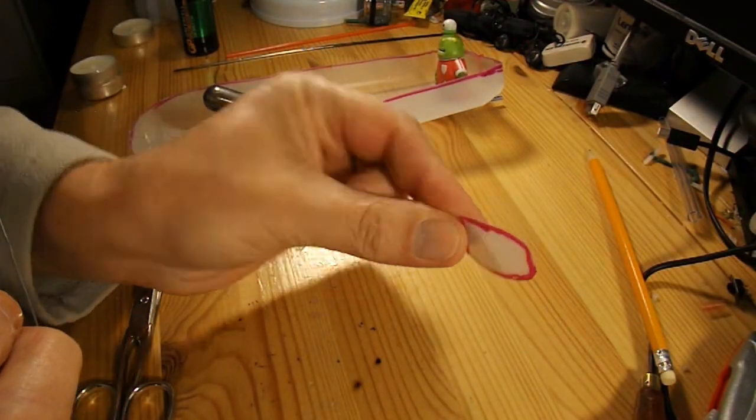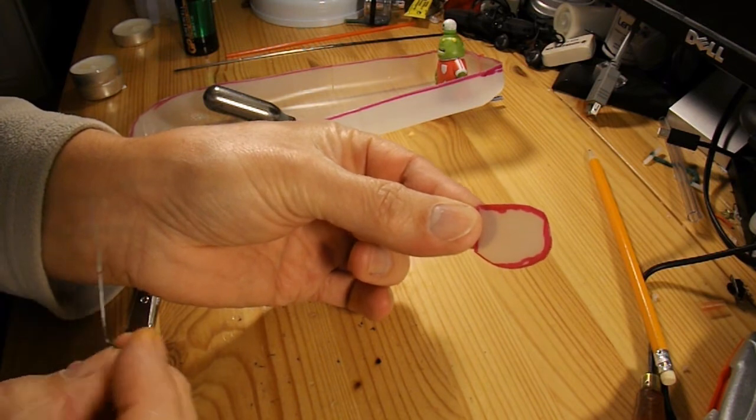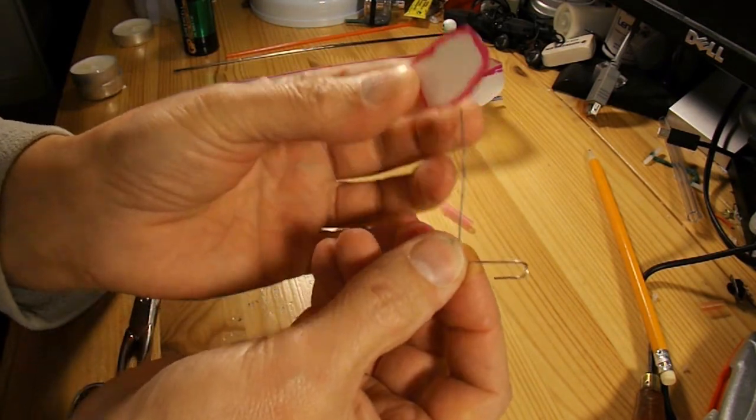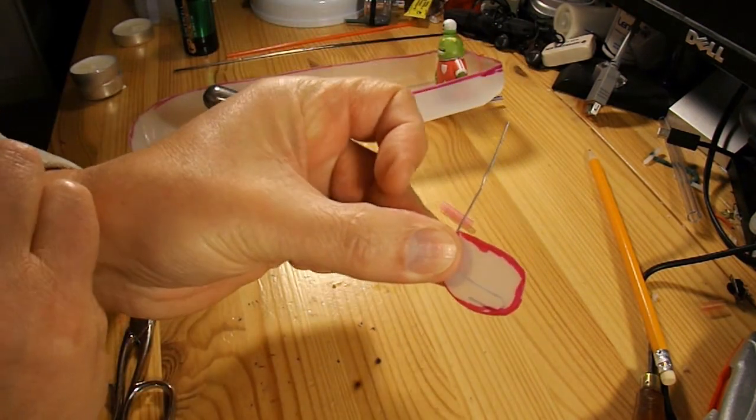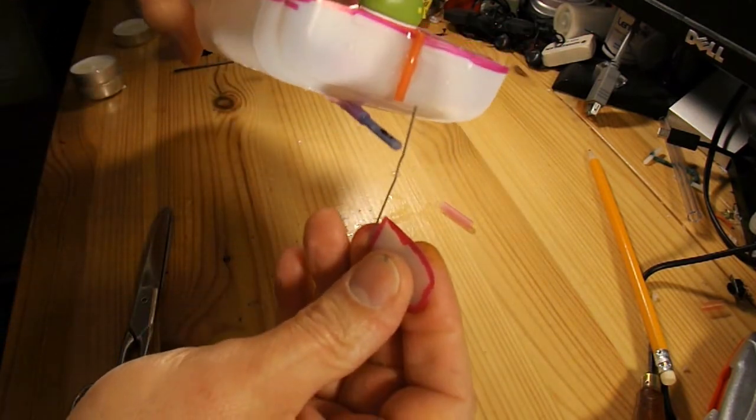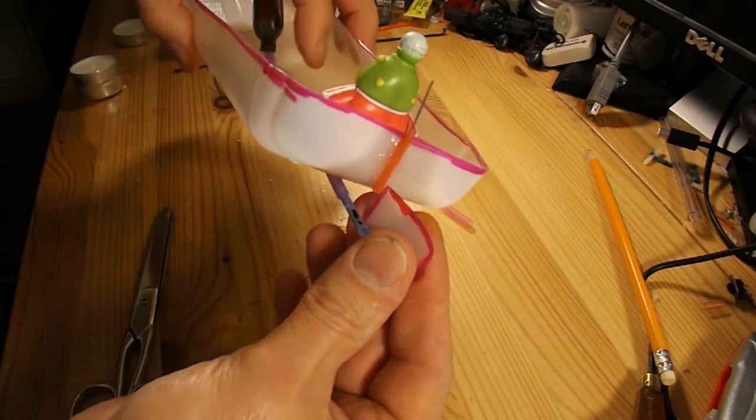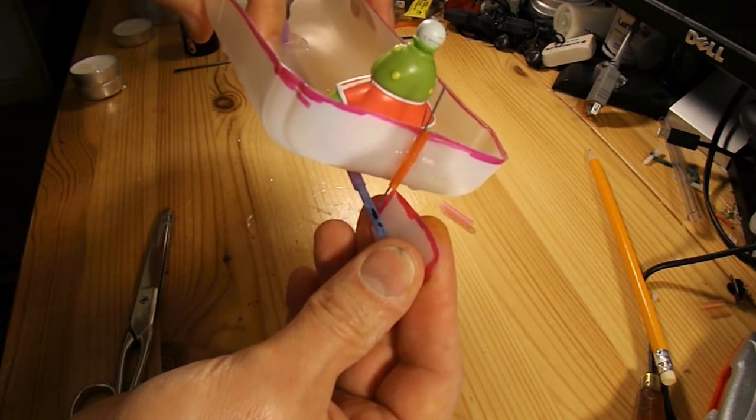This is the rudder. It's just a bit of the plastic from the milk bottle carton. I shall hot glue this paper clip onto it that I've just straightened out. Like that. And then that'll go up through the tube on the back of there. And I can then bend it over the top to hold it in place.